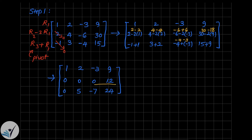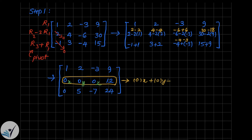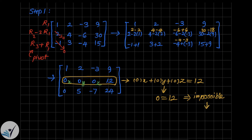Pay attention to the second row we obtained. If we transform it to equation form, we have 0·x + 0·y + 0·z = 12, in other words 0 = 12, which is impossible. This means there is no solution for this system of equations, so we don't need to continue further and implement the other steps.